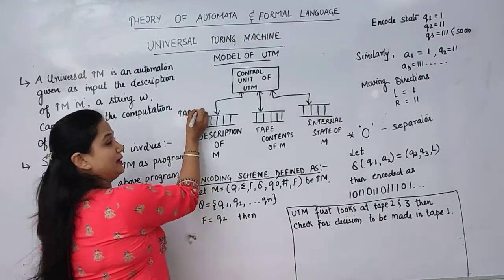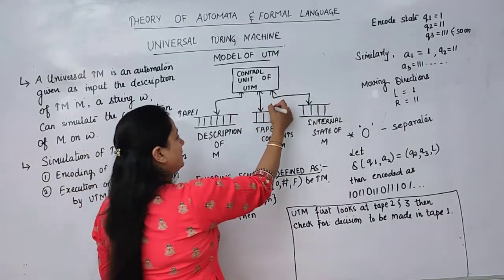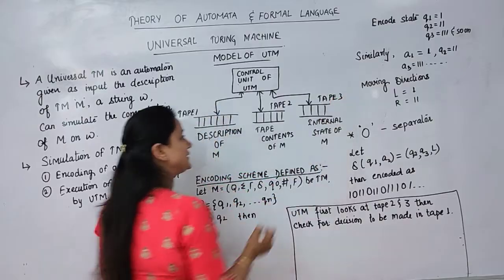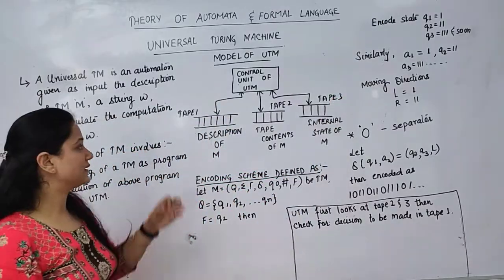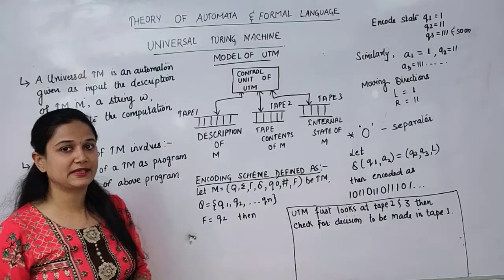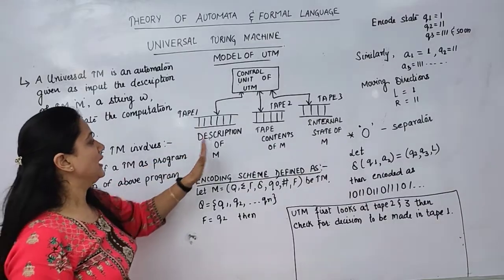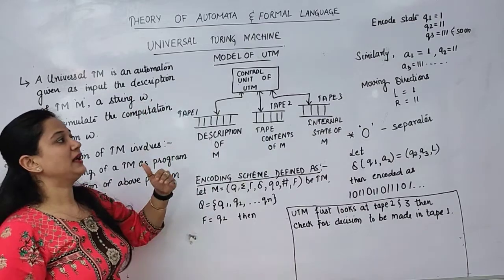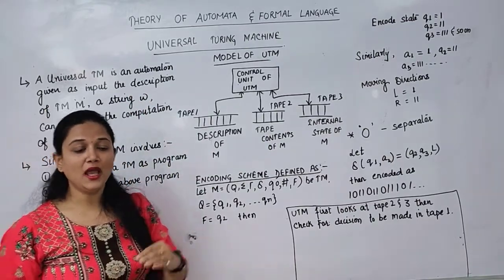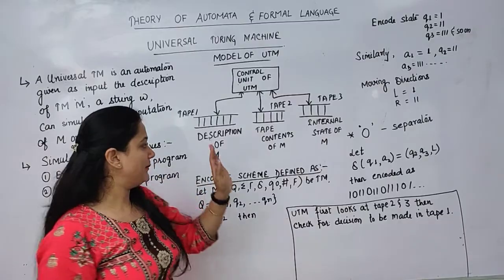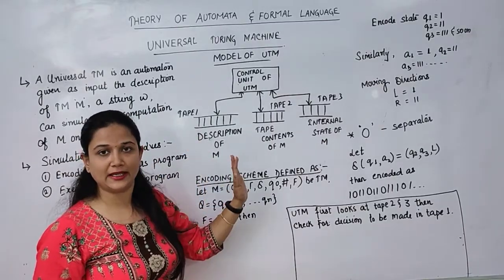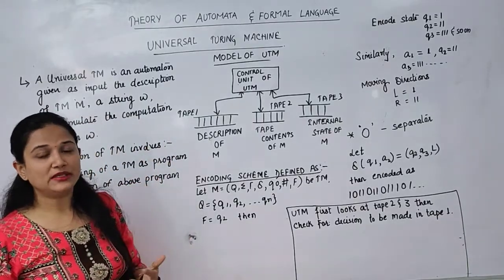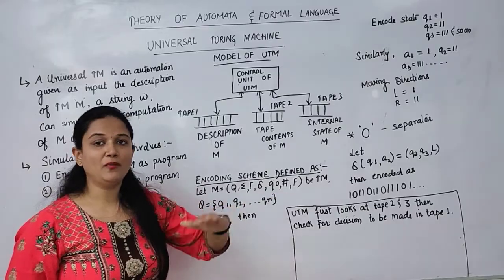This is tape 1, tape 2, and tape 3. Every tape is defined by what kind of data it is carrying. Tape 1 contains the description of M — the transitions of the Turing machine we are giving as input. So this first tape consists of input that is actually the encoded form of the Turing machine.